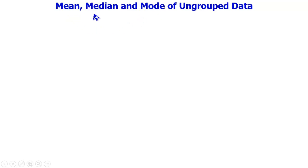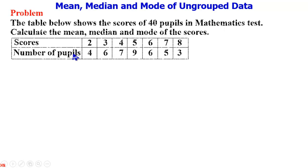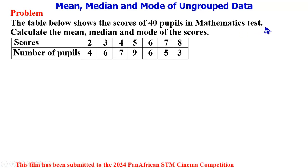Hello, welcome to this video on mean, median, and mode of ungrouped data. We have this problem to solve: the table below shows the scores of 40 pupils in a mathematics test. Calculate the mean, median, and mode of the scores.